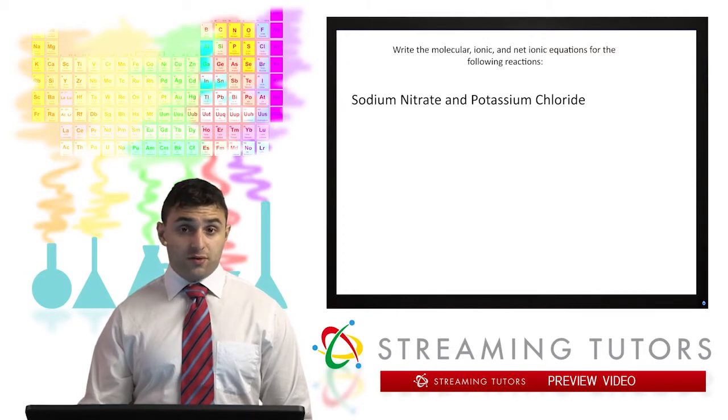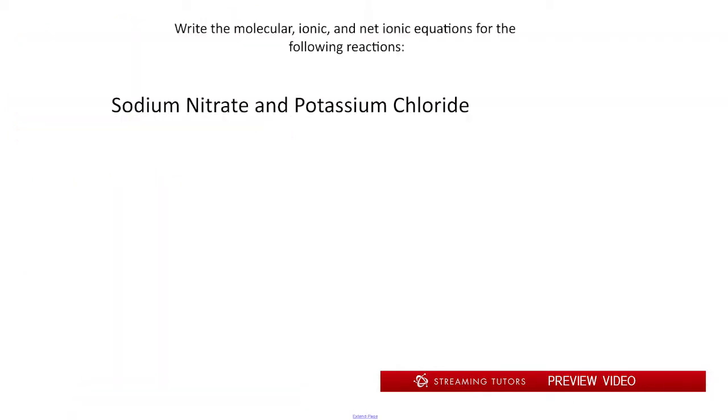Pause the video and try this one now. See if you can get this one. In this one, we have sodium nitrate, NaNO3, plus potassium chloride. We do our double replacement. That's going to form sodium chloride and potassium nitrate. Now if we go across the list, we're going to see that these are all soluble. So in this reaction, we don't have a precipitate. Let's see what that results in. There's our molecular equation.